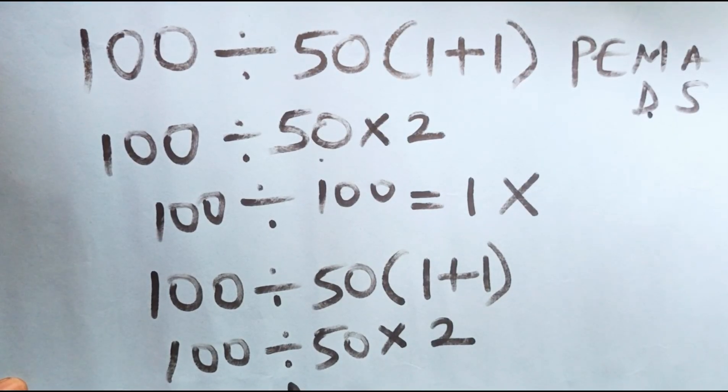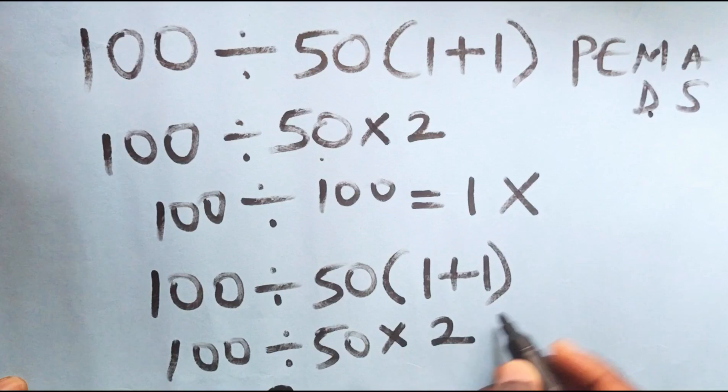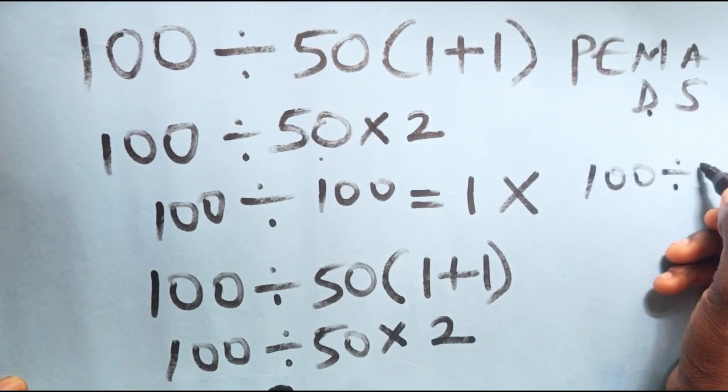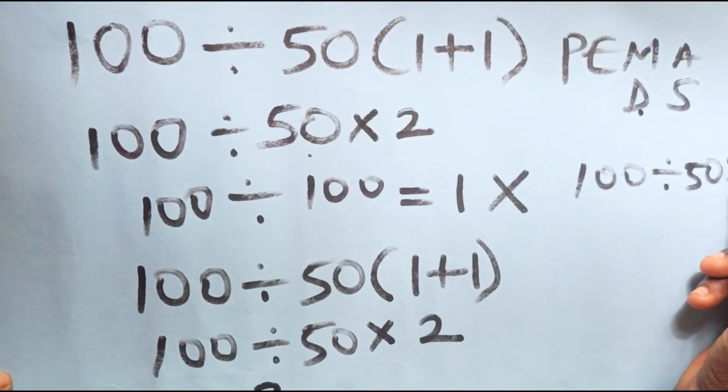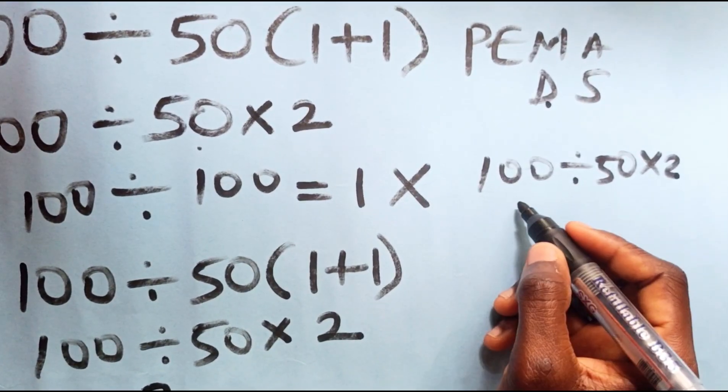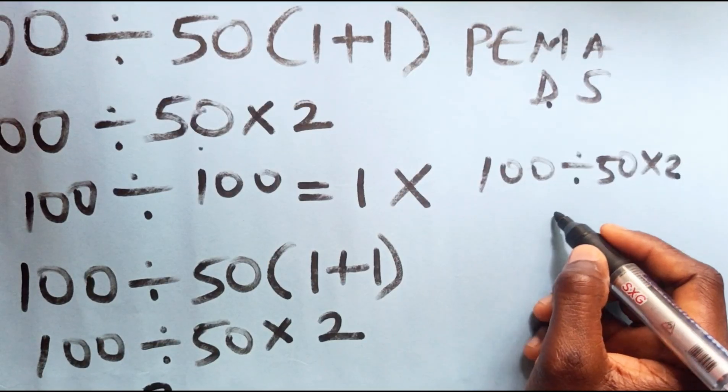So we are going to solve the division before the multiplication. 100 divided by 50 will give us 2, then times 2 will give us 4.